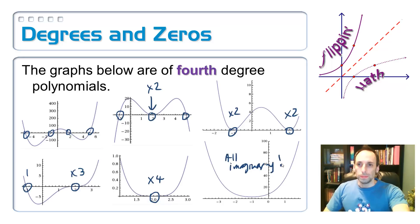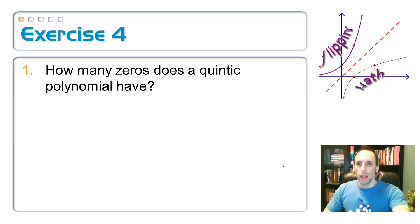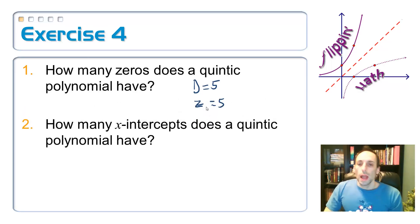So here we go. How many zeros does a quintic polynomial have? Remember, a quintic means it has a degree of five, so degree equals five, so I should expect to have five zeros. Follow-up question. How many x-intercepts does that quintic polynomial have? Well, does it have to have five? No, because some of them could be repeated, or maybe some of them are imaginary. So it's up to five.